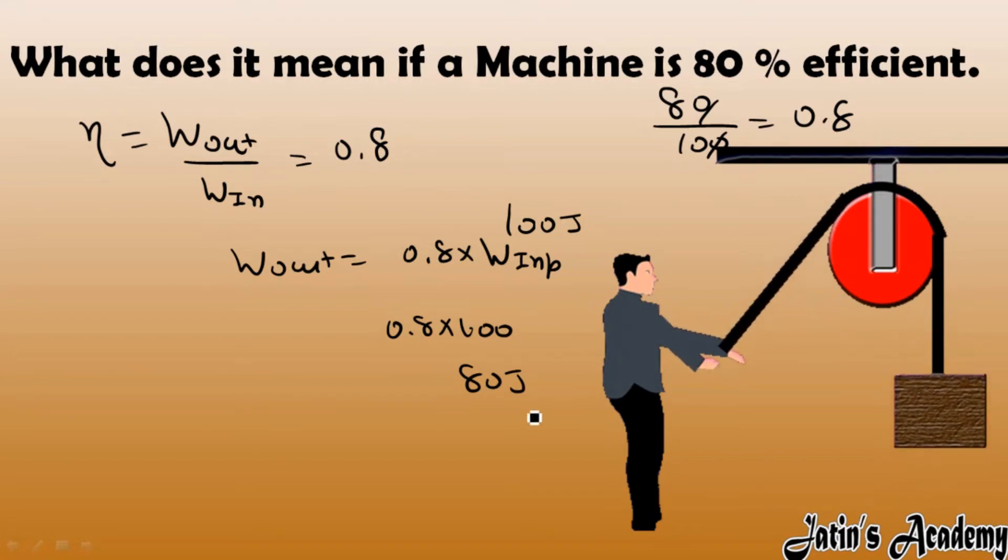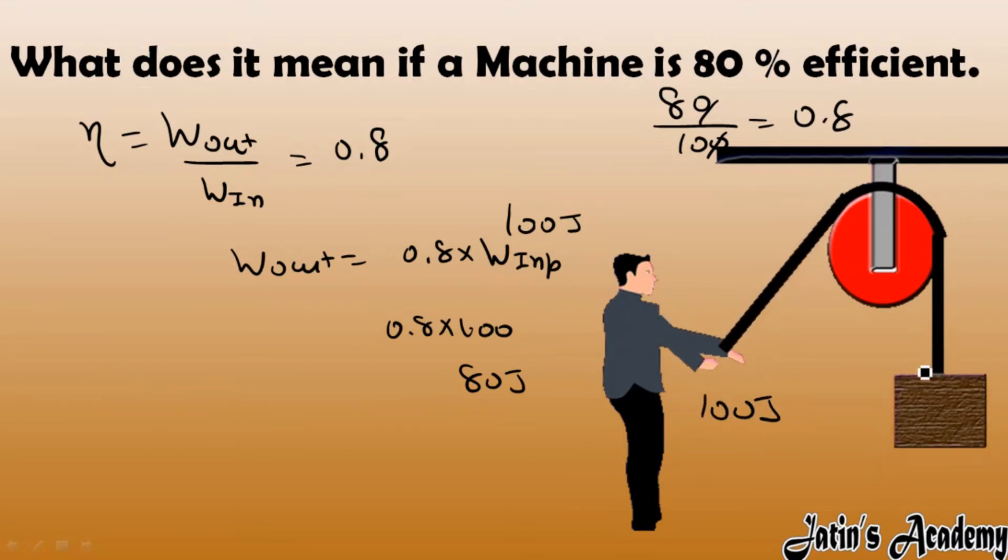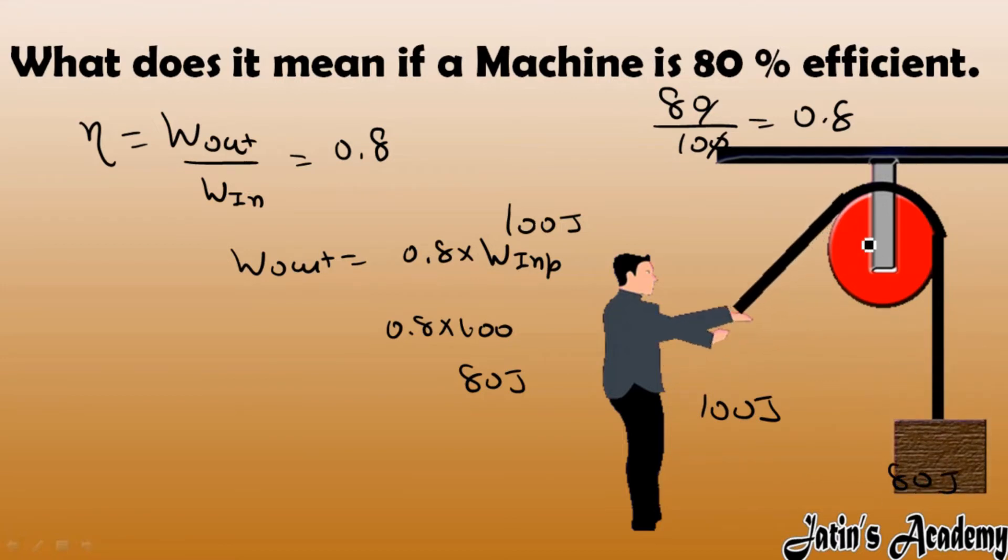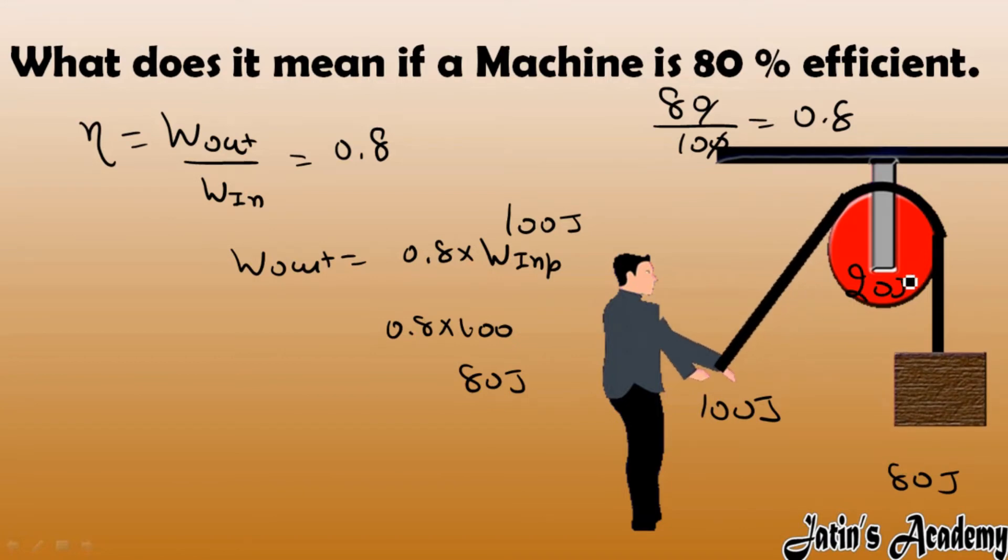So where is this 20 joule gone? You are giving 100 joule, you are getting 80 joule. Where is this 20 joule going? It is going in the pulley in case of losses. Major loss we have is frictional loss.